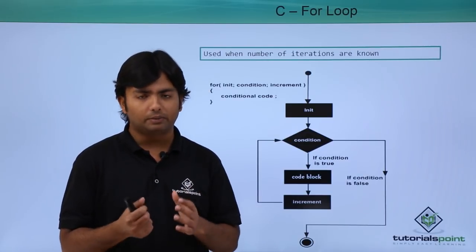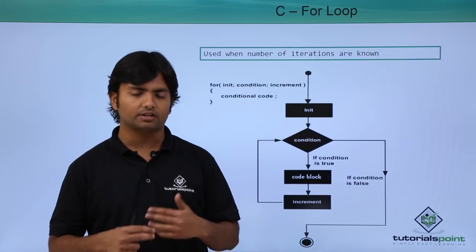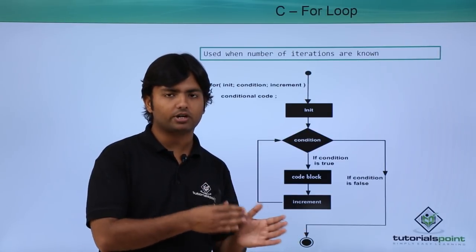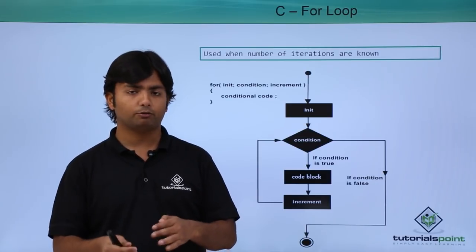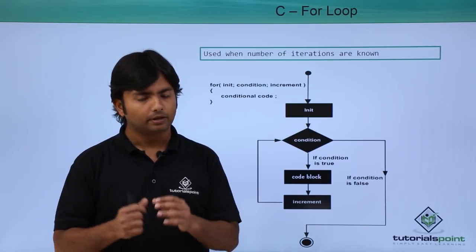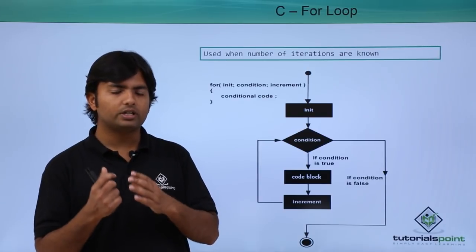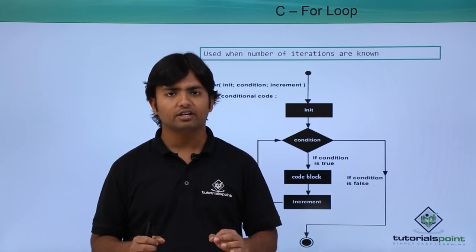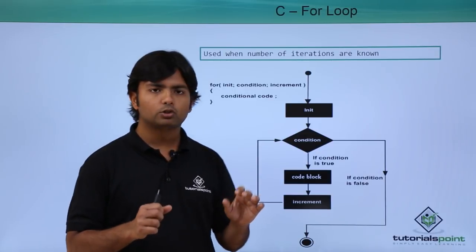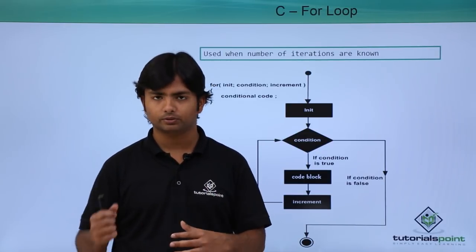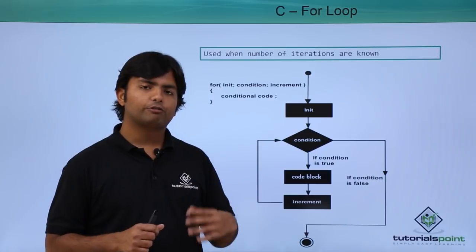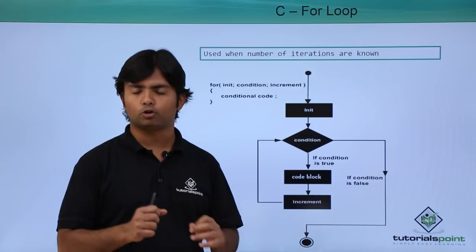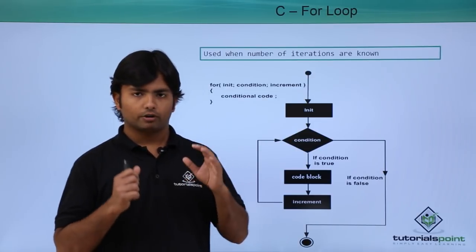When we say something needs to be done continuously, it should have a starting point and a finishing point — from when till when. That is how we can write any particular loop. In the case of for loop specifically, we go for it when we know the number of iterations we need to perform.